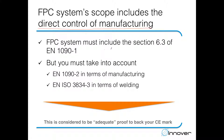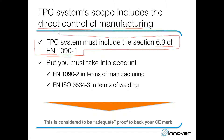The FPC system must include section 6.3 of EN 1091, which is the general part of factory production control where you control resources and develop processes to control non-conforming products. This is directly referenced in Appendix ZA of EN 1091. In addition, you must take into account EN 1092 for manufacturing and EN ISO 38343 for welding.